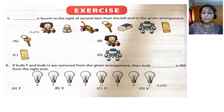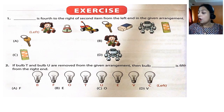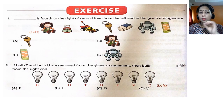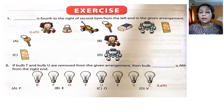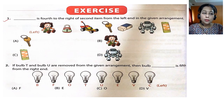Let's begin. Question number 1: dash is fourth to the right of the second item from the left end in the given arrangement. When these kinds of questions come, you have to be careful. For complex questions talking about left or right of an arrangement, the best approach is to start reading from the back end. That strategy will be super easy for you.